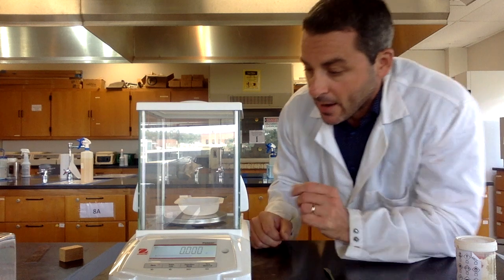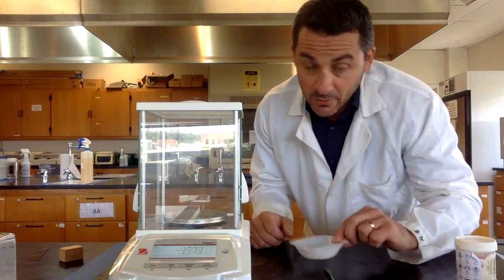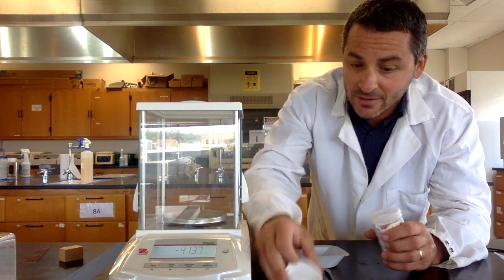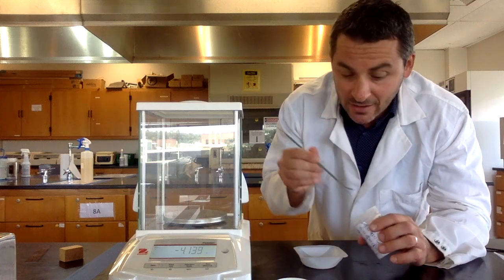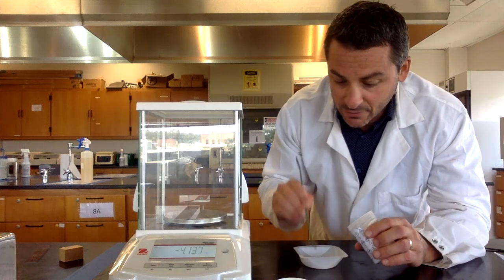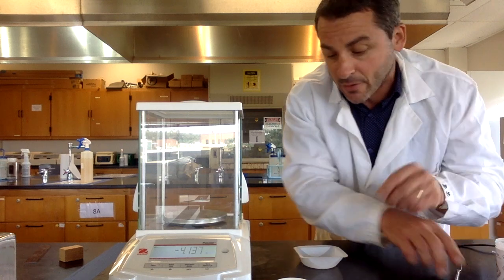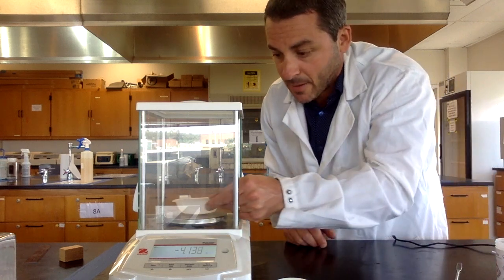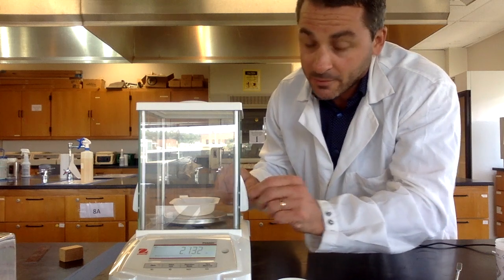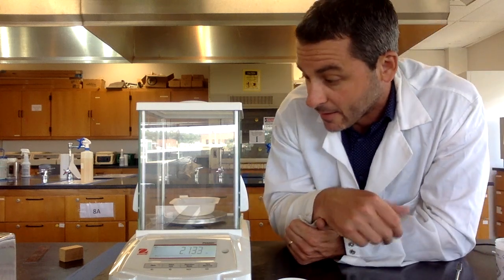Then when you want to weigh out your solids, you take the weigh boat off of the balance. We don't add solids on the balance because that makes a mess. You take a spatula and you spoon some of your solid material into that weigh boat. Then you put the weigh boat back on and now the mass on the balance is the exact mass of the solid only.